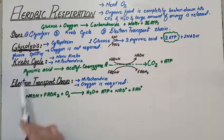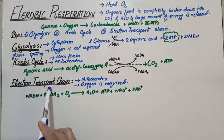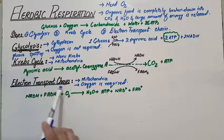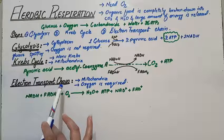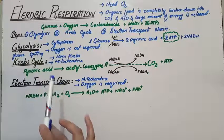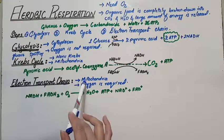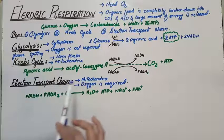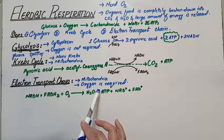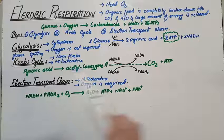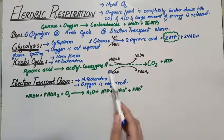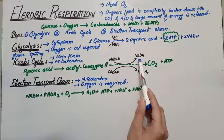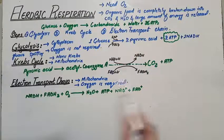After the completion of the Krebs cycle, the last step is the electron transport chain, which contains many sequential reactions. The electron transport chain also occurs in the mitochondria. Oxygen is required for this step — in the absence of oxygen, the electron transport chain will not be completed.